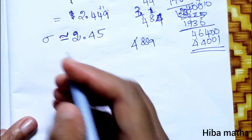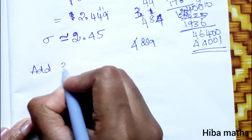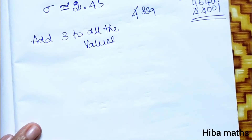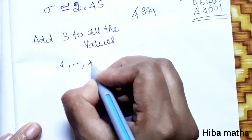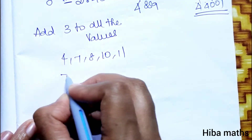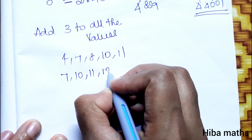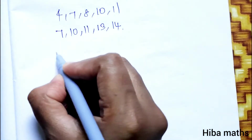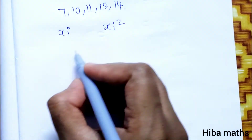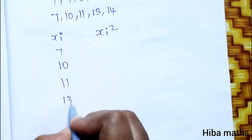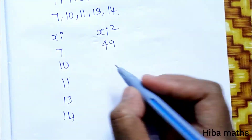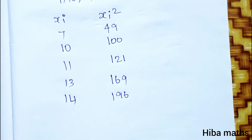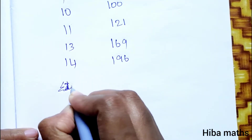Now add 3 to all the values. The original values are 4, 7, 8, 10, 11. Adding 3 to each gives 7, 10, 11, 13, 14. This is our new set of values. Setting up the Xi and Xi² table: 7, 10, 11, 13, 14 with squares 49, 100, 121, 169, 196.